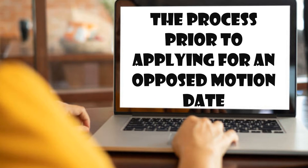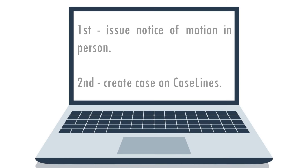The Process Prior to Applying for an Opposed Motion Date. Before I get into the CaseLines side of things concerning opposed motion dates, I will briefly explain the process leading up to the point of requesting an opposed motion date. An opposed motion date will be required when an application becomes formally opposed. The following explanation is in line with the Uniform Rules of Court and the Gauteng Division's various practice directives and practice manual.